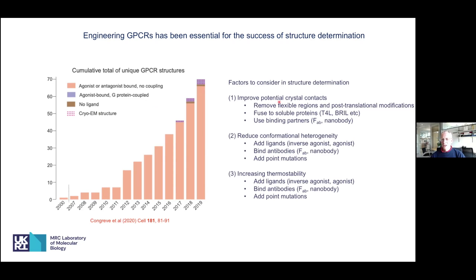For crystallography, we had to think about removing flexible regions, post-translational modifications, fusions to soluble proteins to improve crystal contacts, and using binding partners. Two key parts are: reducing conformational heterogeneity and increasing thermal stability. You can use the same techniques to improve both, but you have to be careful — adding a ligand may increase thermal stability but may not reduce conformational heterogeneity enough to get crystals. These things have to be considered independently, and you've got to find the right combination that allows both to occur.